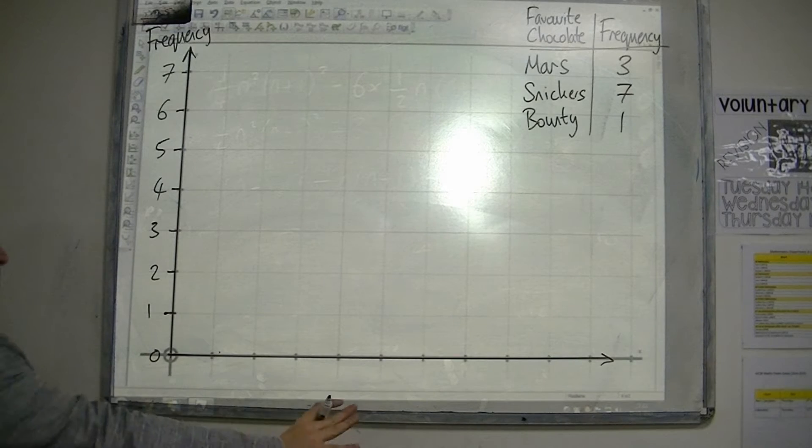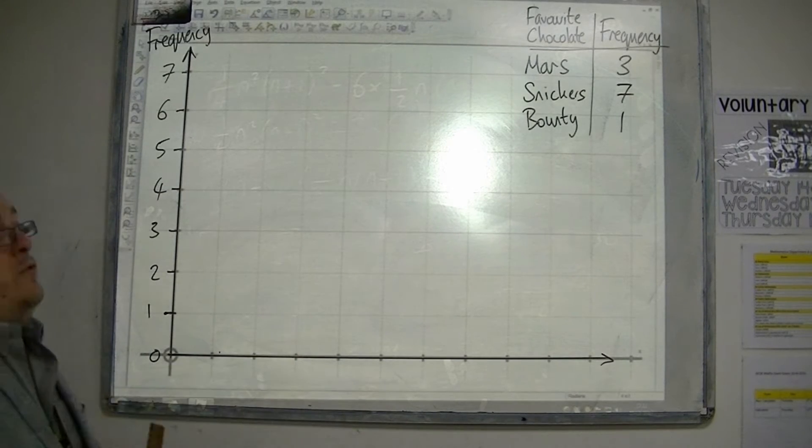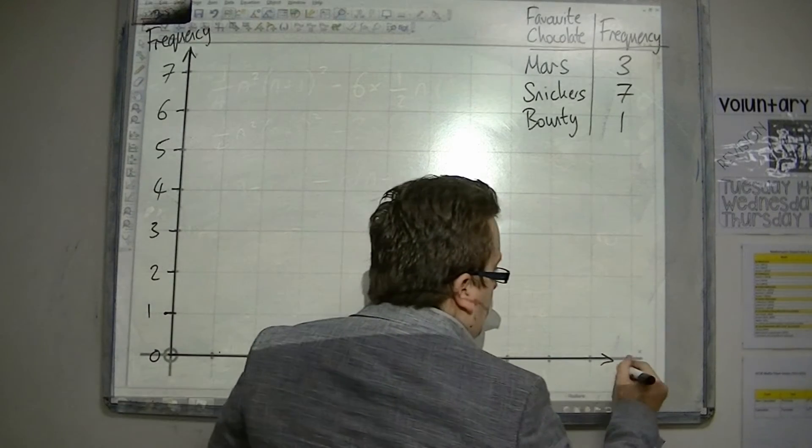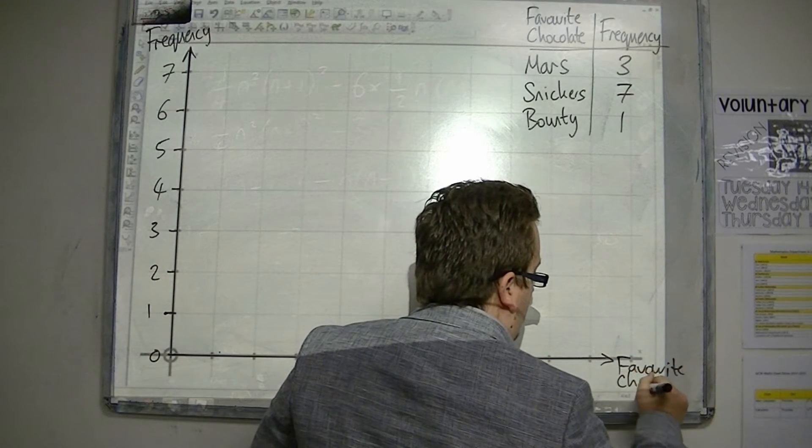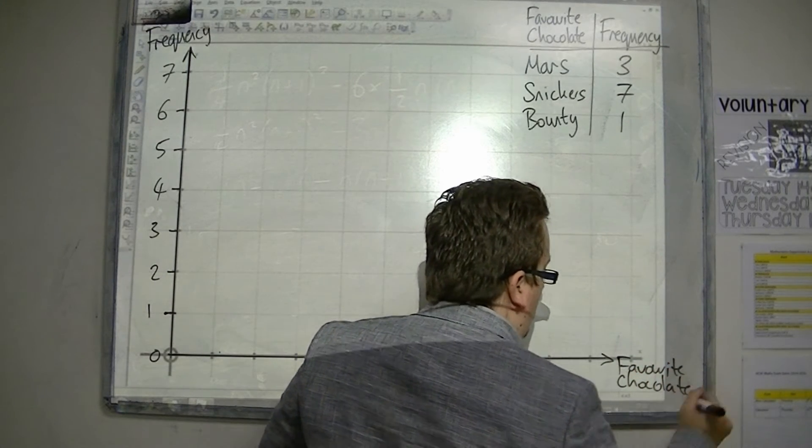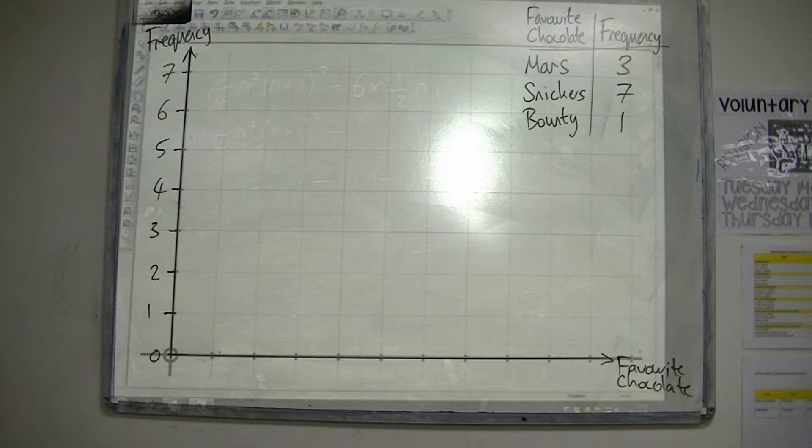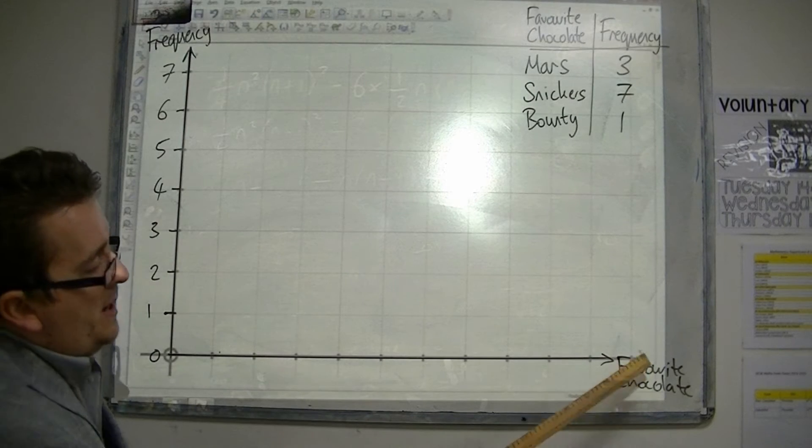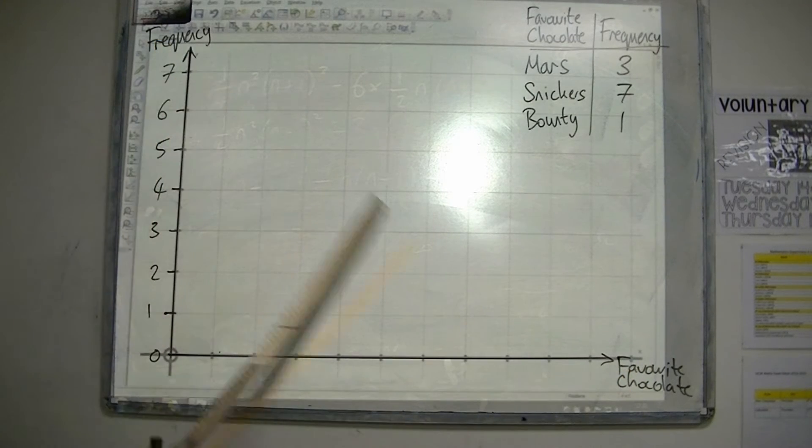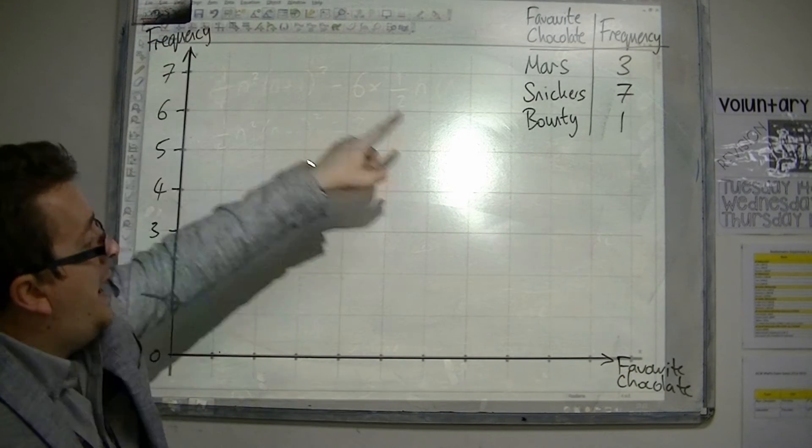Now, along the bottom, the bottom is going to be represented by the favourite chocolate bars. So, it is necessary to make sure that you are labelling the axes. They should have names.